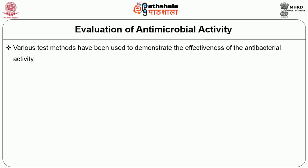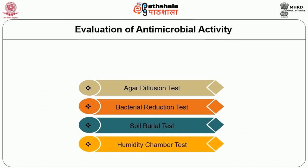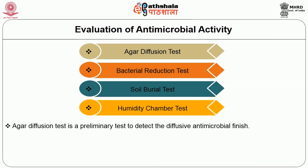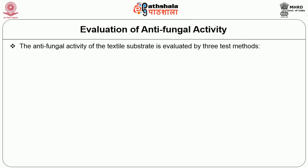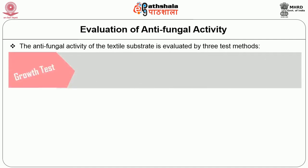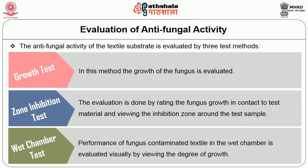Various test methods demonstrate the effectiveness of antibacterial activity. Some of the tests used are: agar diffusion test, bacterial reduction test, soil burial test, and humidity chamber test. The agar diffusion test is a preliminary test to detect diffusive antimicrobial finish and is not suitable for non-diffusive finishes. In quantitative analysis, the difference between the actual bacterial count of the treated and untreated material is assessed. For antifungal activity, three test methods are used: growth test, which evaluates the growth of fungus; zone inhibition test, which rates fungus growth in contact with the test material and views the inhibition zone; and wet chamber test, where performance of fungus-contaminated textile in the wet chamber is evaluated visually by viewing the degree of growth.